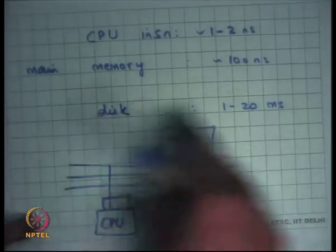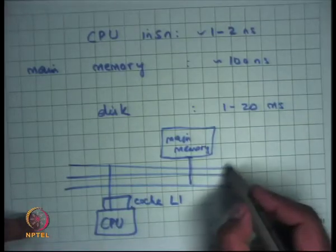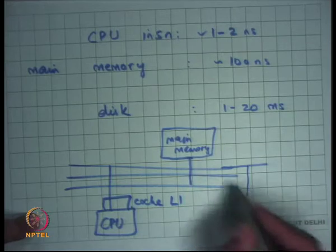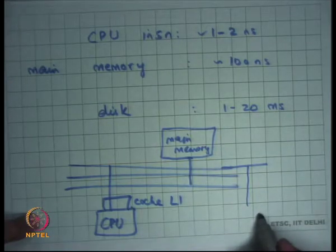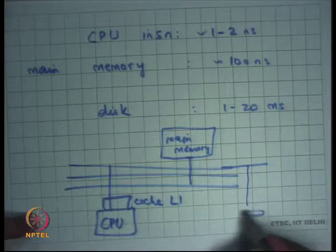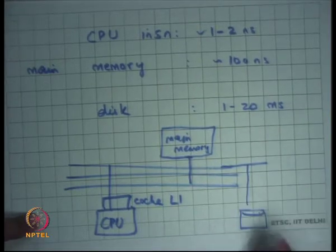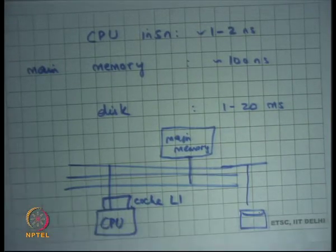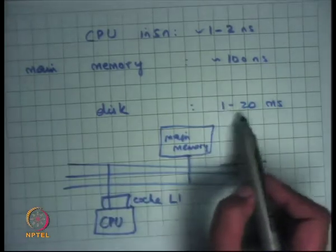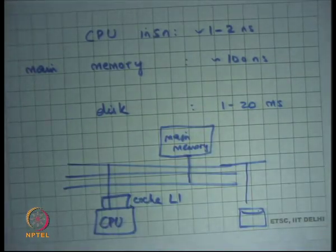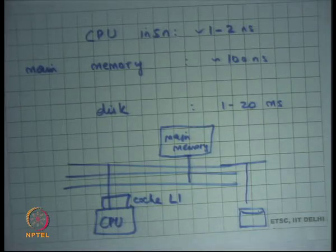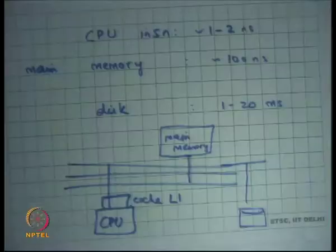A disk transaction also goes through the bus, but eventually the bottleneck is the disk device itself because it's a mechanical device. The disk usually takes on the order of milliseconds as opposed to nanoseconds — so it's roughly a million times slower than your CPU.